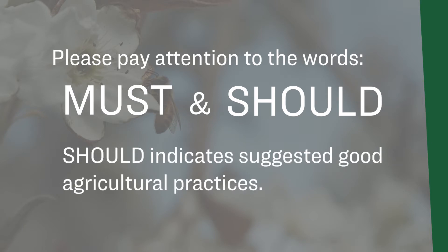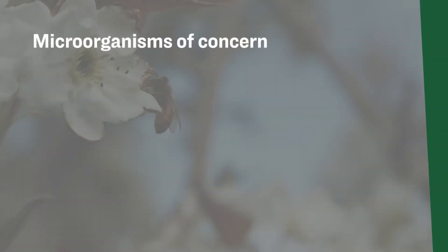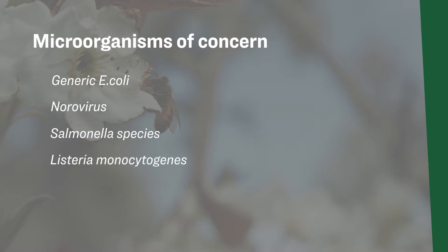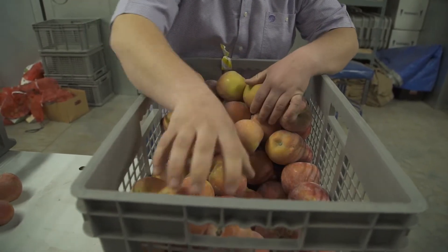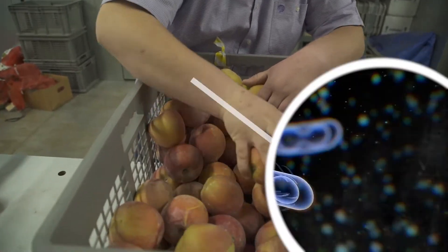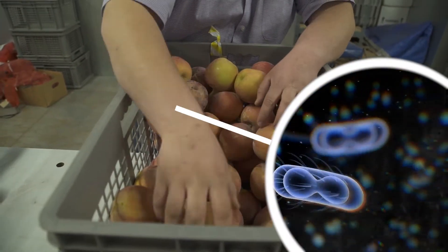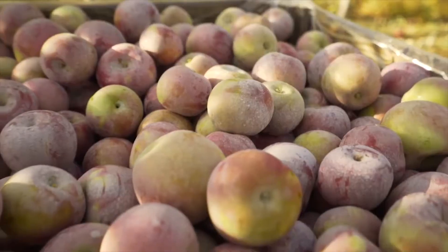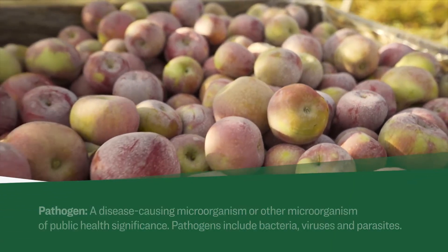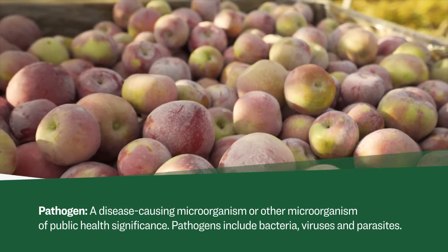The microorganisms of public health significance include but are not limited to generic E. coli, norovirus, salmonella species, and Listeria monocytogenes. These microorganisms, also known as pathogens, are of great risk to fresh produce and can cause disease, illness, and death in humans. Pathogens can exist in the natural environment, can multiply very quickly, and not be seen, smelled, or tasted.